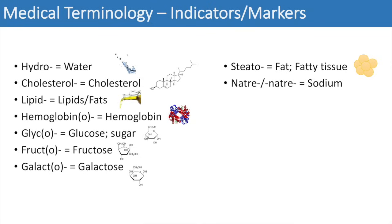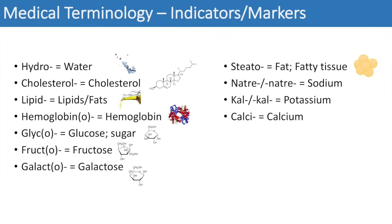'Galacto' stands for galactose — you might hear galactorrhea. 'Steato' stands for fat or fatty tissue — steatosis or steatorrhea. 'Natri' or 'natr' means sodium — hypernatremia is too high a concentration of sodium in the blood, and hyponatremia is the opposite; these are very critical conditions. 'Kal' stands for potassium — hyperkalemia is too high a concentration and hypokalemia is too low; these can have devastating health impacts. 'Calci' stands for calcium — hypercalcemia. 'Chlor' means chlorine. 'Chol' means bile — cholangiitis or cholecystectomy.